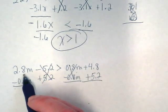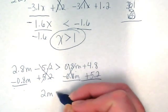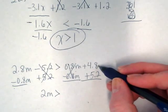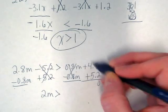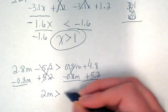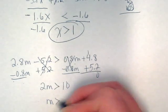And 2.8m minus 0.8m is just going to be 2m is greater than 4.8 plus 5.2 is going to give us 10. When we divide that we're dividing by 2 which is not going to have us reverse our symbol at all and m is just going to be greater than 5.